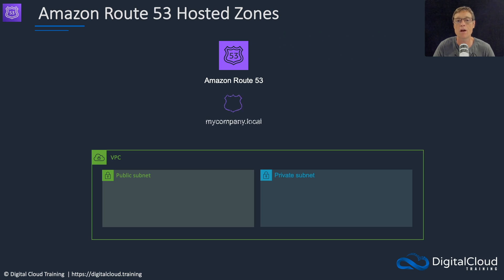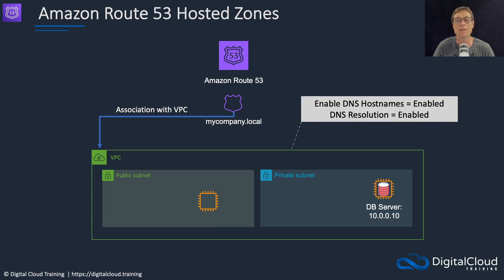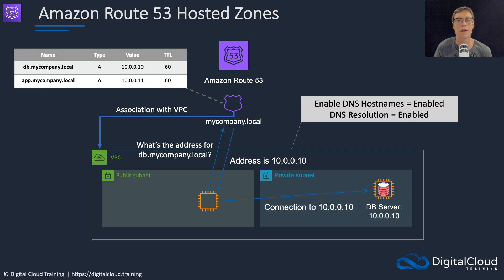We can also have private hosted zones. Here we have mycompany.local, with instances and database servers. We need to find out the addresses of those resources. The private hosted zone gets associated with the VPC — we need to enable DNS hostnames and DNS resolution in the VPC settings. We then have records for our resources in the hosted zone, and the EC2 instance is able to look up the IP address of the database server. That's an example of a private hosted zone.